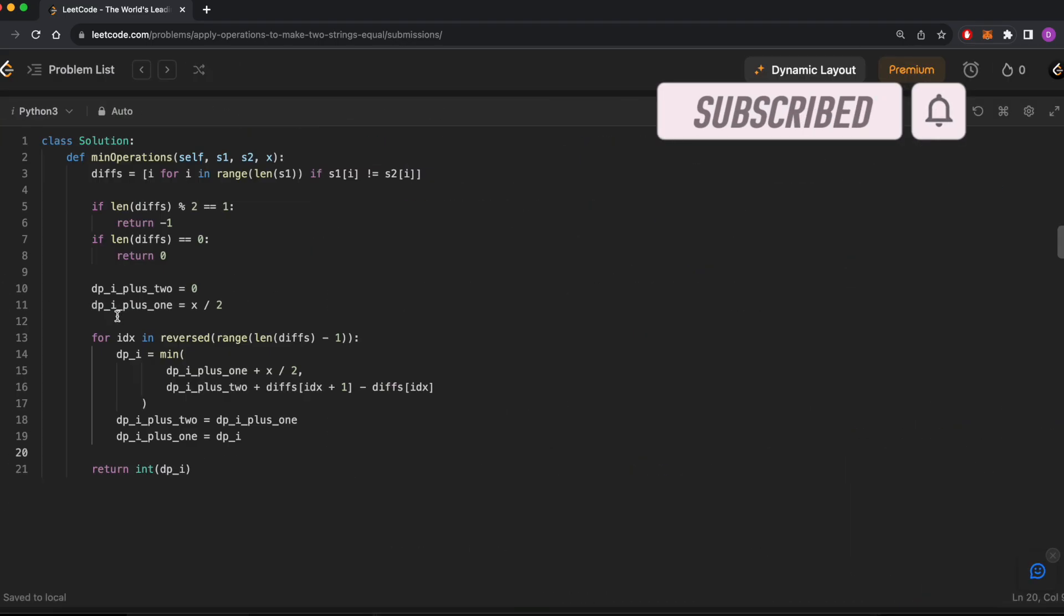Now, I want to acknowledge that this solution still runs in linear space because of this diffs array here. There's actually a linear time solution with O(1) space, but that solution deserves a video of its own. I'll link the video in the description if I ever get around to it. But anyway, I think this is a pretty intuitive solution with pretty reasonable code, and hopefully it's enough for your needs. If you found this video helpful, please like, comment, and subscribe. I'll see you in the next video.